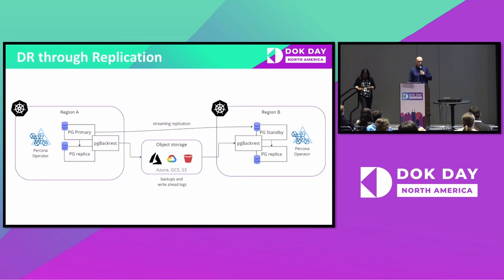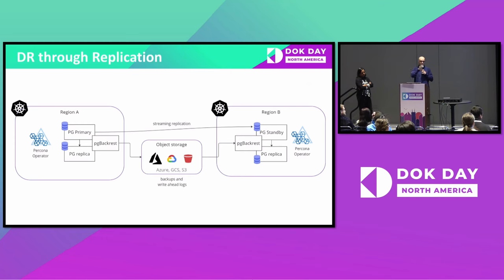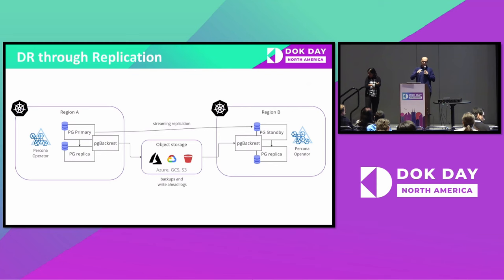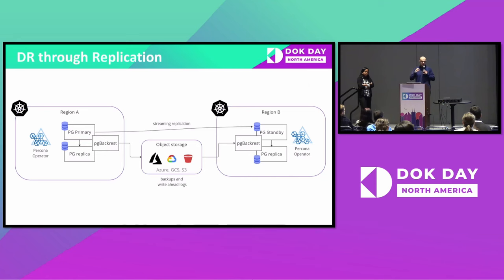There is a better way: instead of relying solely on backups, you can use streaming replication. That way all your data is synchronized live between two Postgres clusters in different regions. You can also replicate via object storage — WAL files are streamed directly to PG Backrest in region B — giving you real-time replication. This is how you set up a solid DR configuration, and it works great. But there are still problems to face.